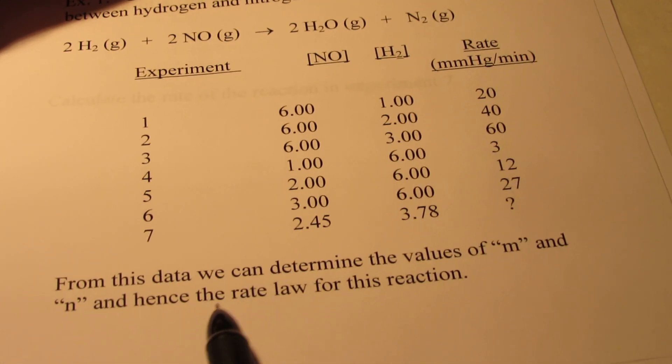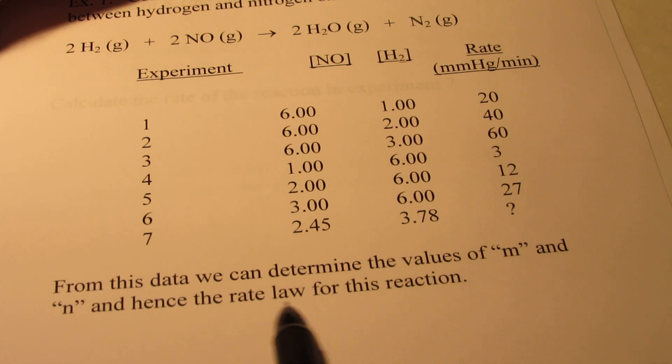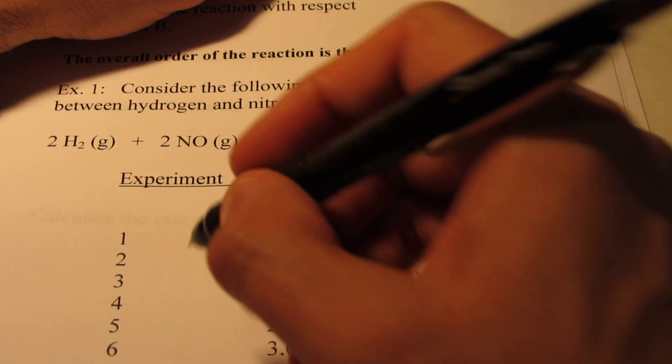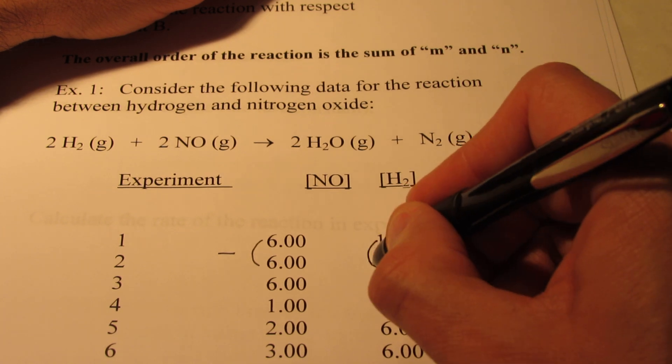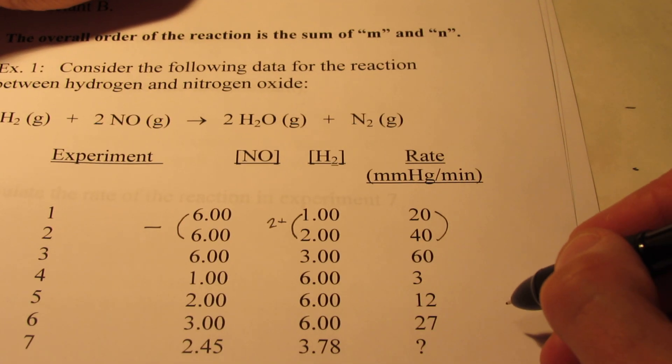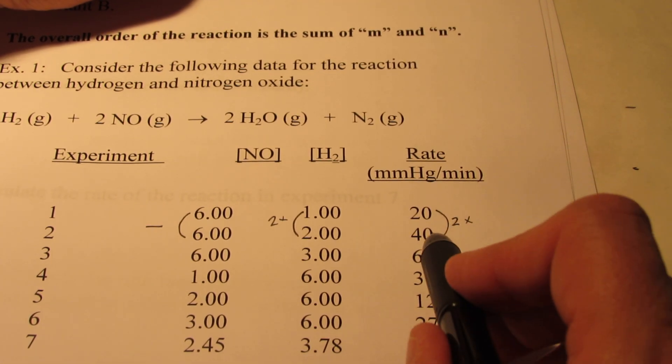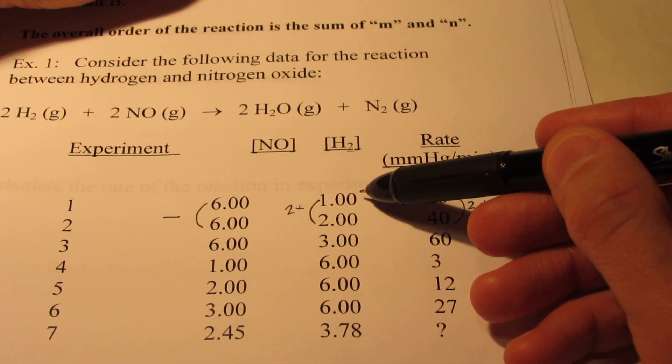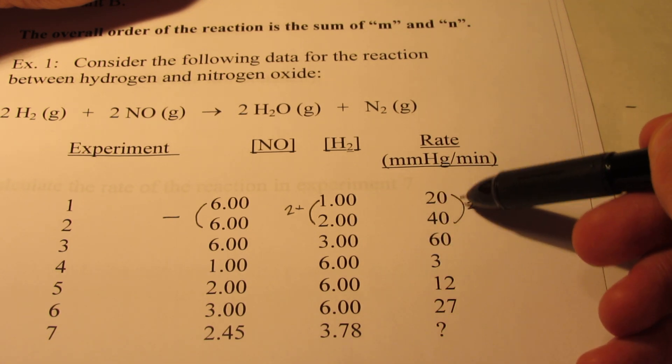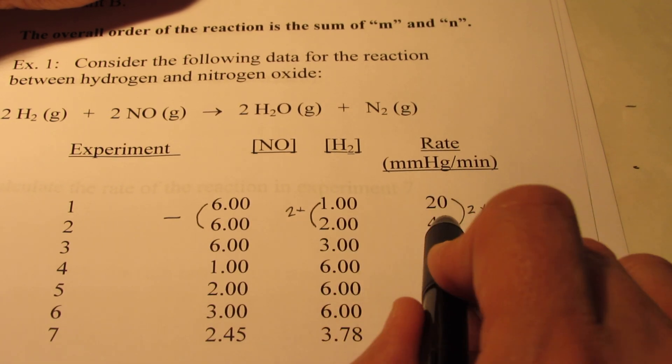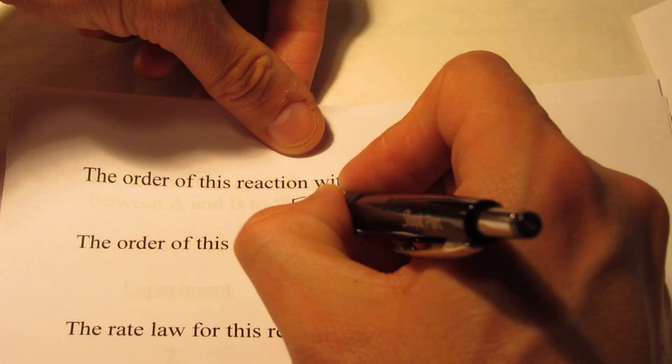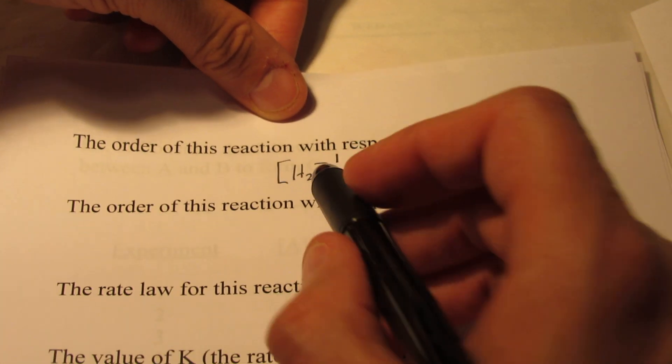From this data, we are going to determine the values of M and N, and hence the rate law for this reaction. Let's take a look at our first two experiments. Do you notice that the NO concentration does not change? But the H2 concentration doubles. What does the rate do? The rate also doubles. Why did the rate double? Was it because of anything I did to NO? No, that stayed constant. Was it because of what I did to H2? The H2 doubled, and the rate doubled. Isn't that that direct proportionality that we talked about a moment ago? Where the order would be one? So the order of this reaction with respect to H2 is first order, or to the first power.